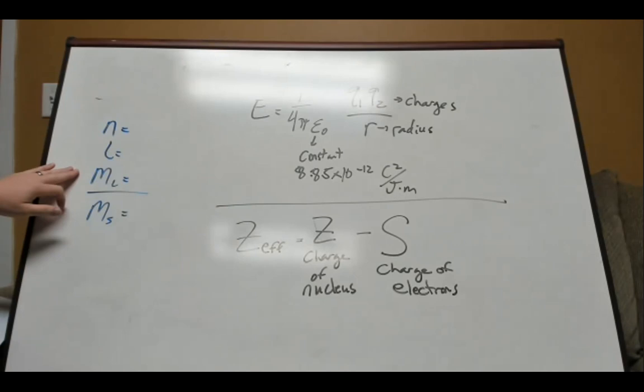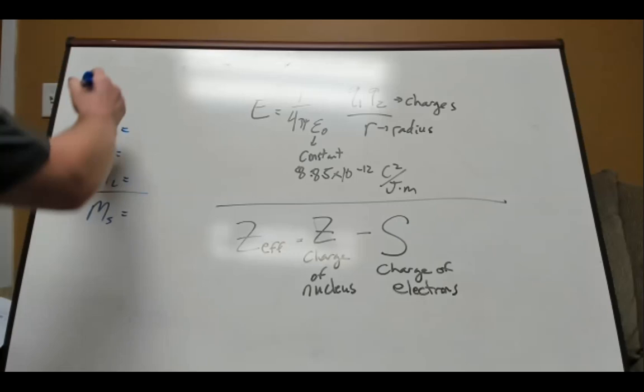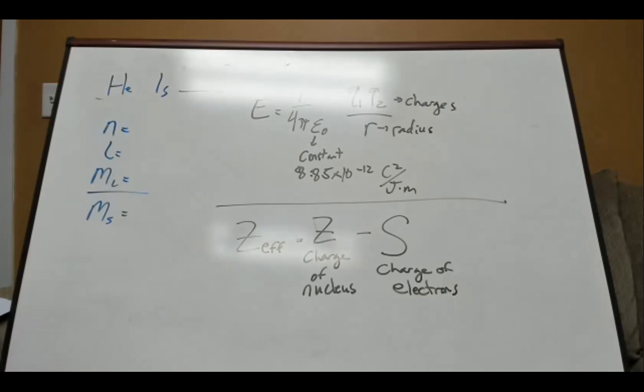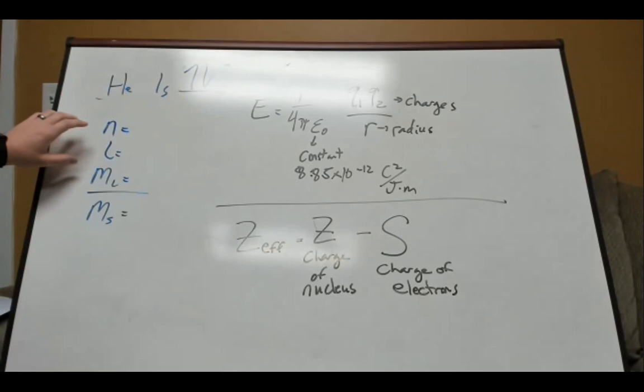The second quantum number describes the shape, and the third describes the orbital orientation — for S it's zero, and for P it's minus one, zero, and plus one. Let's look at helium. Helium has two electrons, which we'll call electron A and electron B. We'll talk about how we fill these, but for now we know there are two electrons. Let's look at these electrons in terms of their quantum numbers.